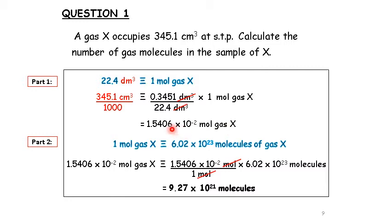Since this is not the final answer yet, make sure your answer is expressed to the appropriate significant figures. After successfully finding the number of moles, we proceed to find the number of molecules. Every substance in one mole equals 6.02 times 10²³ molecules. So using the moles from step one with stoichiometry — this times Avogadro's number divided by one mole — the answer is 9.27 times 10²¹ molecules. Don't forget the unit.